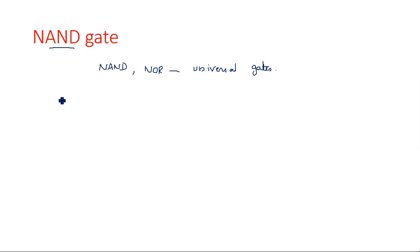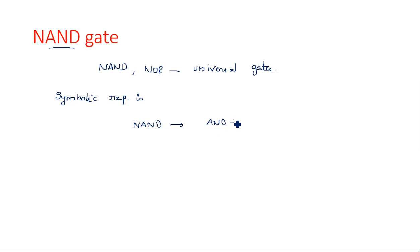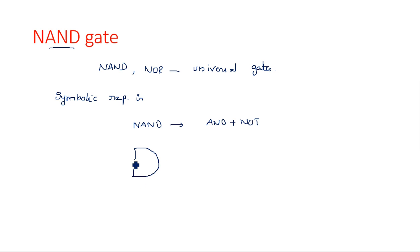The symbolic representation of the NAND gate is like this. NAND is nothing but AND followed by NOT. That means an AND gate followed by a NOT gate will give you the NAND operation. In NAND, the N stands for NOT, plus AND.